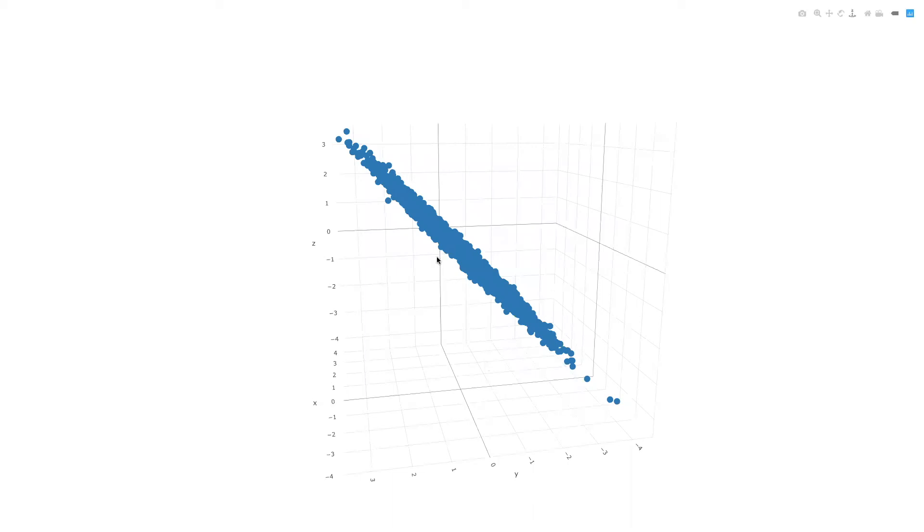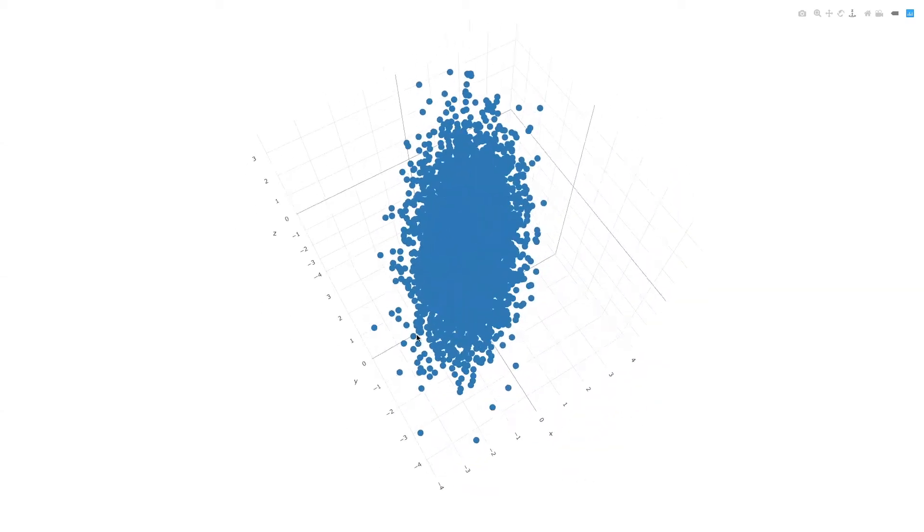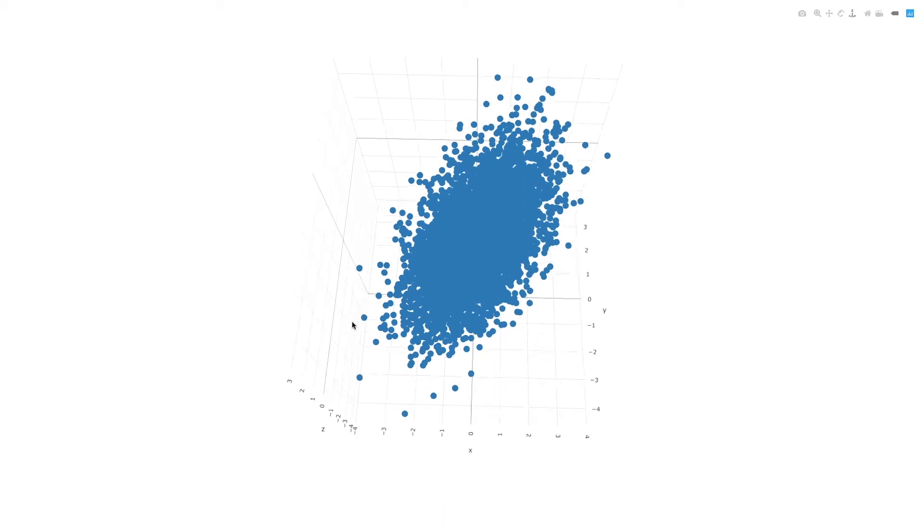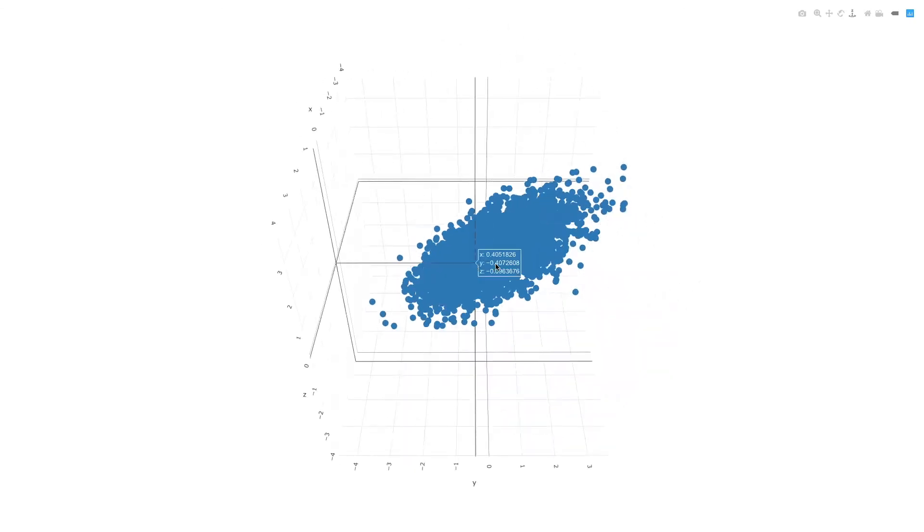But I also see that there's really not much variance in that direction. And I think you could agree that if I were able to take, you know, something of a steamroller and flatten that data out along that direction here, I wouldn't lose that much information. I would still have a very good picture of how each point was spatially related to every other point. And that's exactly what we're going to do here.